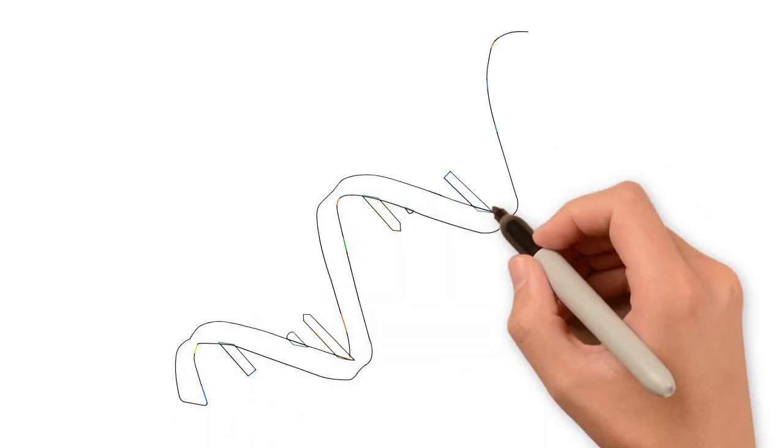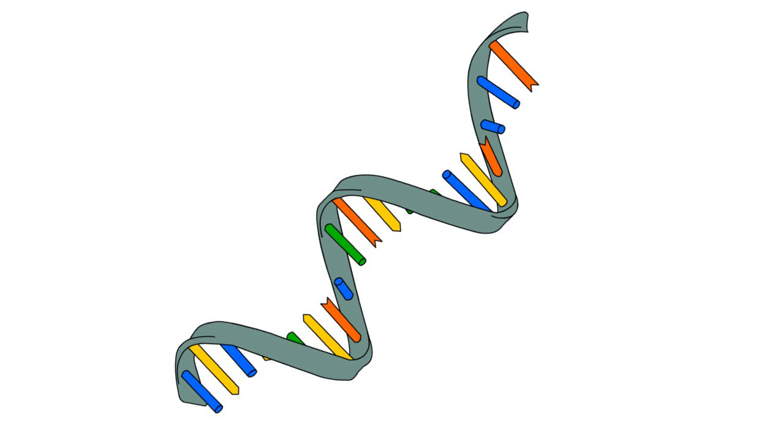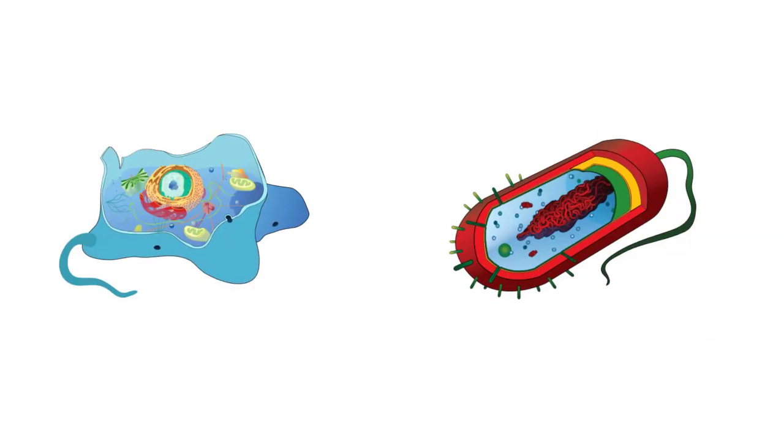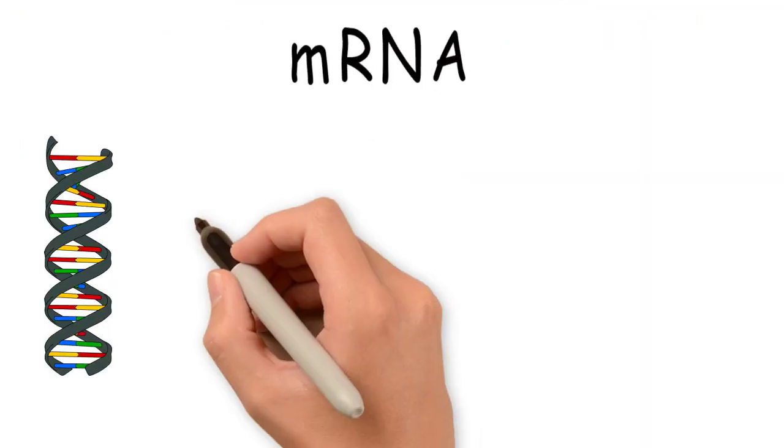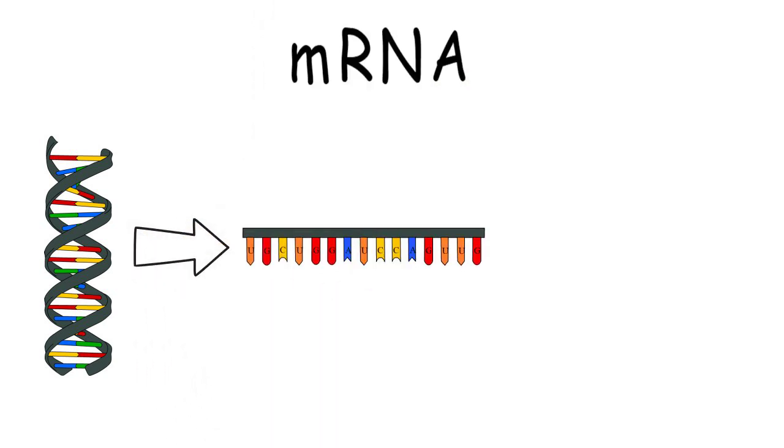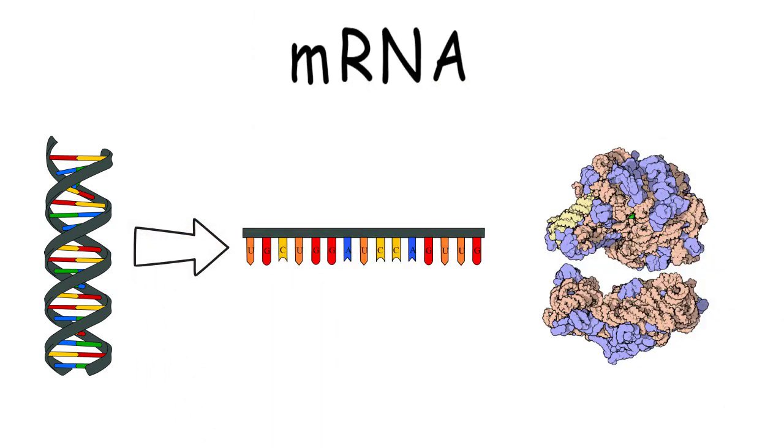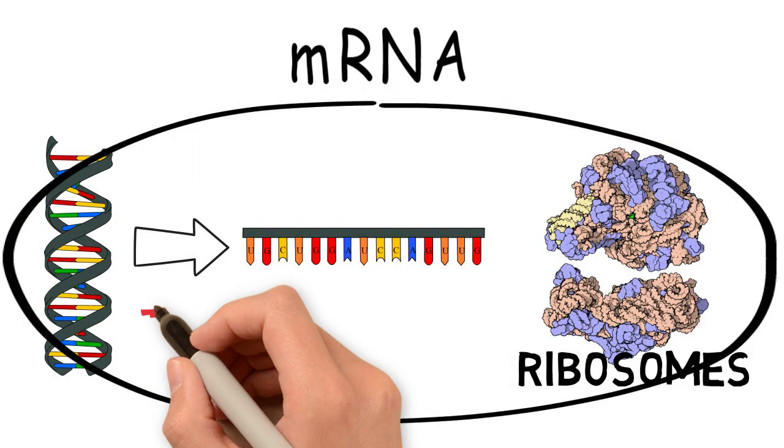RNA plays many important roles in cells, especially in the process of protein synthesis. Cellular organisms use messenger RNA, or mRNA, to make a copy of the genes in the genome and bring those transcripts to the protein synthesis machinery, which are called ribosomes. This whole process is called transcription.